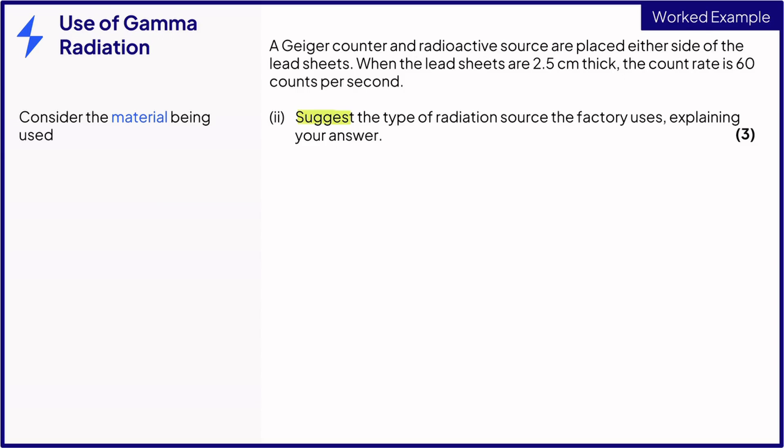We are used to using beta radiation for material thickness, but beta cannot penetrate 2.5 cm thick lead at all. Gamma radiation is the correct type of radiation to use here, and suggesting this gets the first mark.